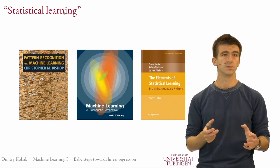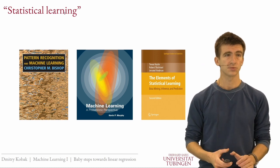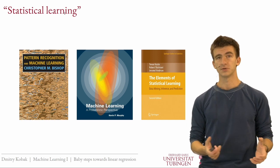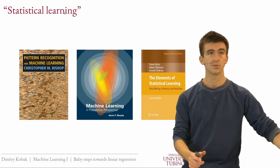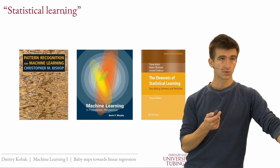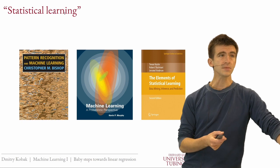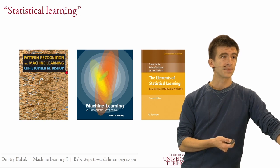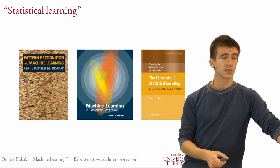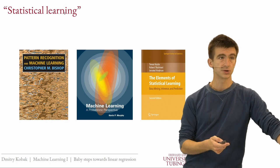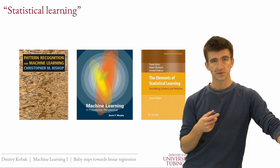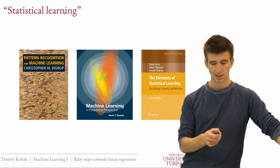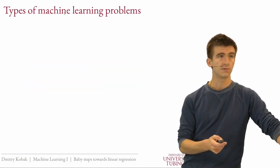One of the most well-known textbooks on machine learning is called The Elements of Statistical Learning — a term that tries to combine statistics and machine learning. The Elements of Statistical Learning is freely available online, as is Machine Learning by Bishop. Both are great textbooks. Murphy is also very good. If this is your first time learning about machine learning they may be a bit complicated, but hopefully by the end of the course you'll be able to read them comfortably.